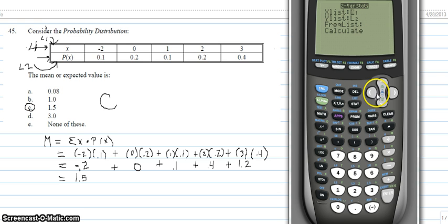Enter L1 for our X list, L2 for our Y list, frequency list we'll leave blank, calculate, enter, and then 1.5 is going to be our mean. To get the 1.5, you have to arrow down, and there you go. There's your answer. So, that's how that one is done on the calculator.